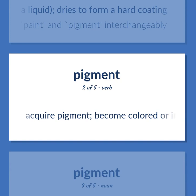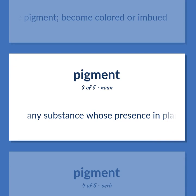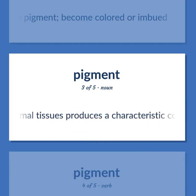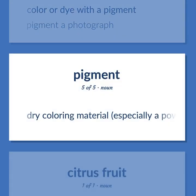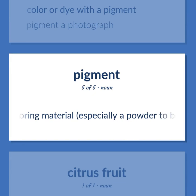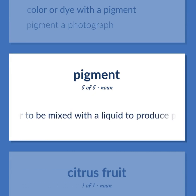Acquire pigment — become colored or imbued. Any substance whose presence in plant or animal tissues produces a characteristic color. Color or dye with a pigment — pigment a photograph. Dry coloring material, especially a powder to be mixed with a liquid to produce paint, etc.